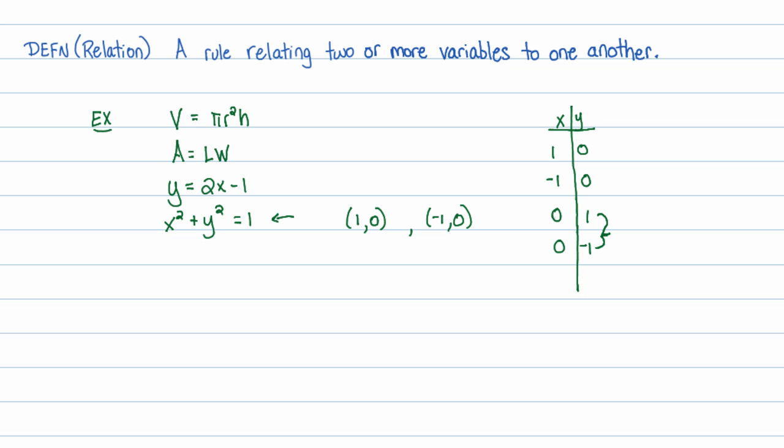If I plug in the number 0 for X, and I have a couple different options for Y, so two options, then this is sort of an issue in mathematics. We don't like to have options. We like to say, hey, I plug in 0, I get out 1. Not, I plug in 0, I get out 1 or negative 1. So this is the issue with relations that are not functions.